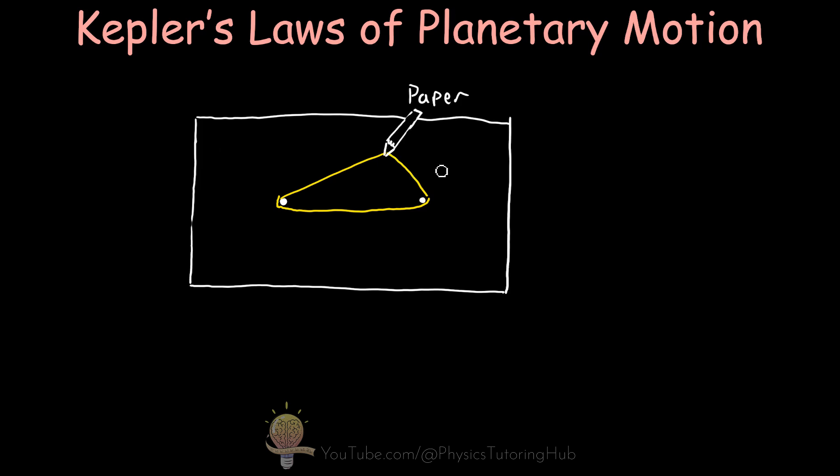Now when you place a string around the pencil and the pins like this and trace a continuous line on this piece of paper, and at the same time making sure that this string is fully stretched, we'd end up with an elliptical shape. Now because this string doesn't stretch, the sum of these two distances here remains constant.